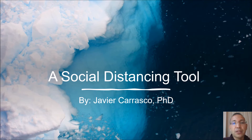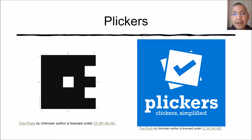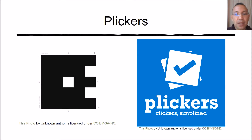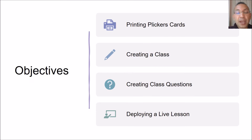Our focus will be on a social distancing tool. Clickers is a rapid response classroom polling app that lets teachers use one mobile device to scan paper cards for student responses. Our objectives for today are to focus on printing Clickers cards, creating a class, creating class questions, and deploying a live lesson.